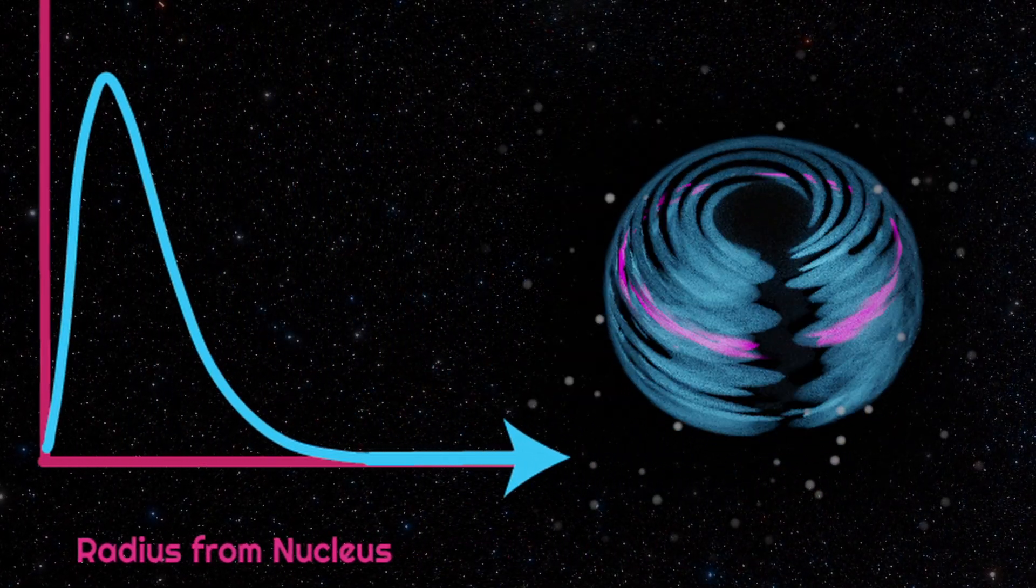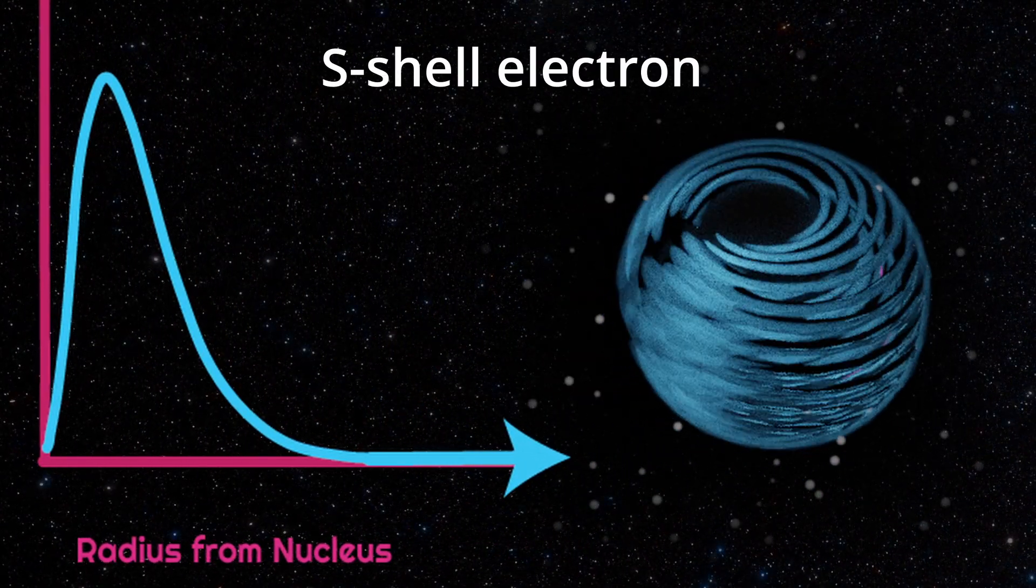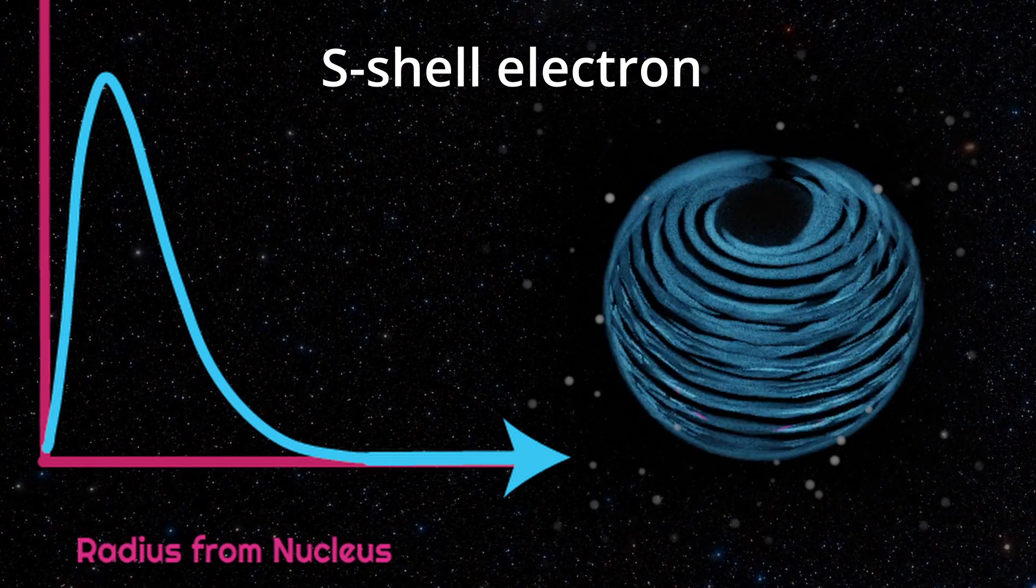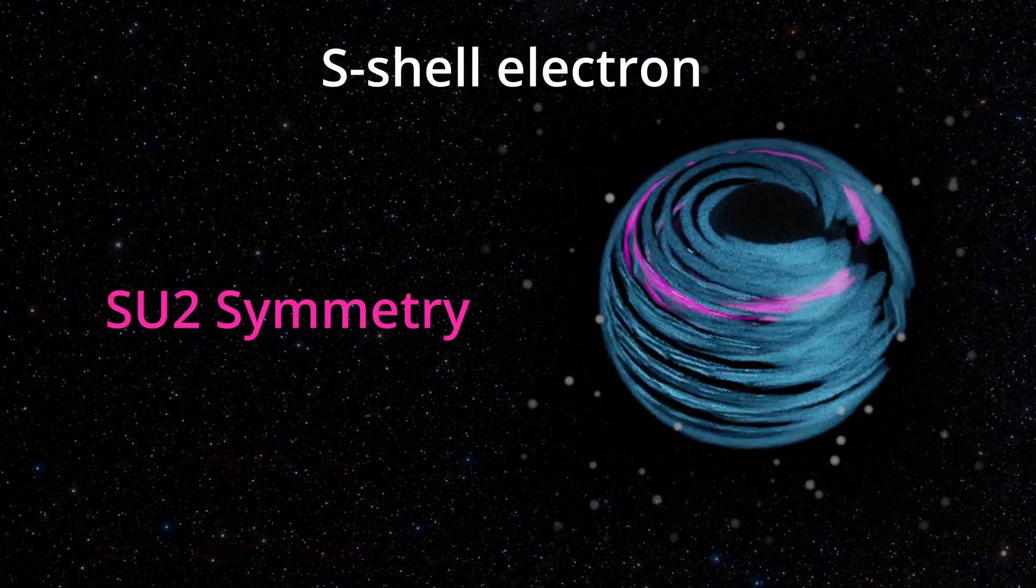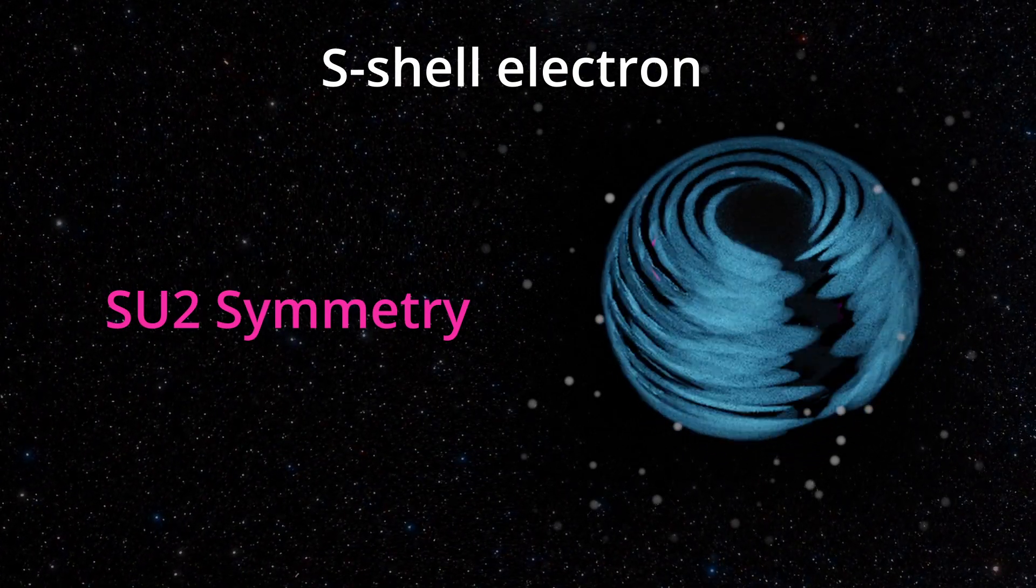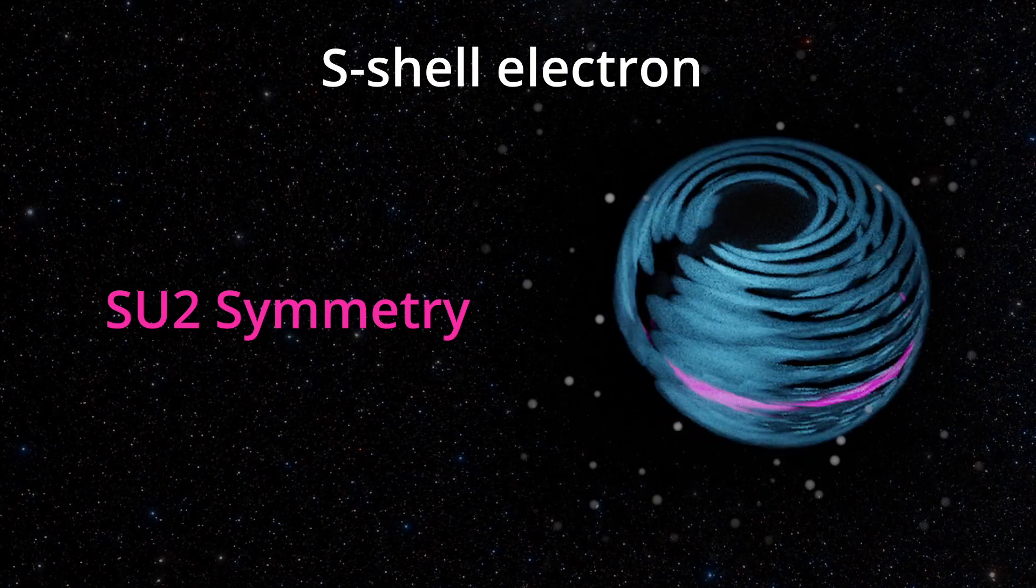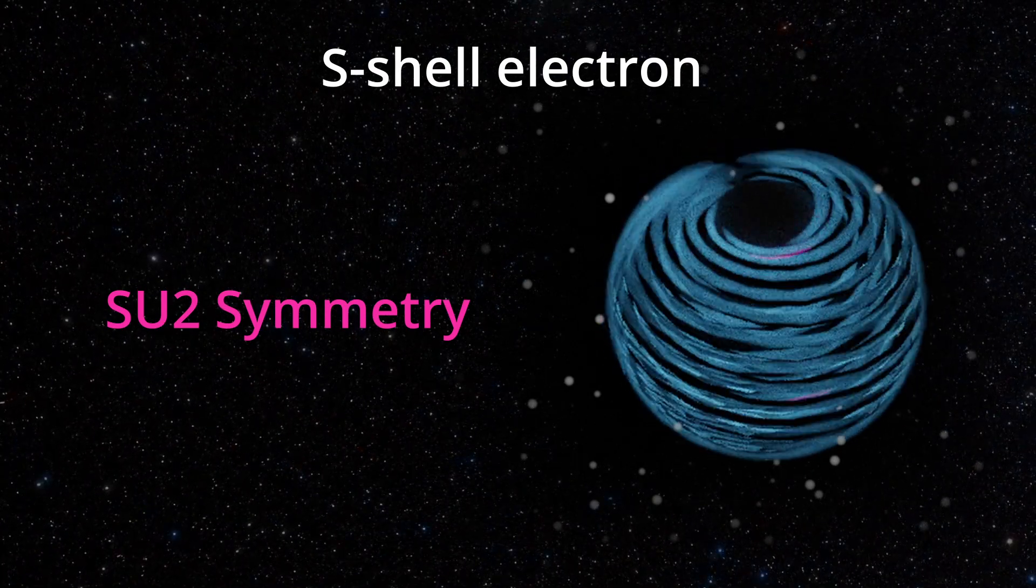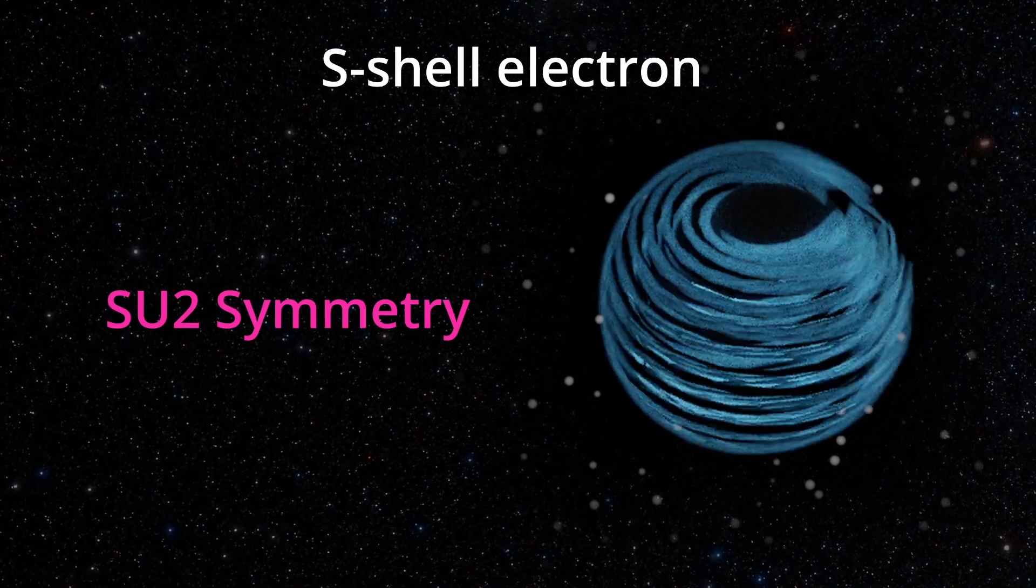This view of the atom shows the spherical S shell. It displays the electron's strange SU2 symmetry, which means that it rotates twice before returning to its starting point. For more details about how this works, check out our video on electron spin linked in the upper right-hand corner.